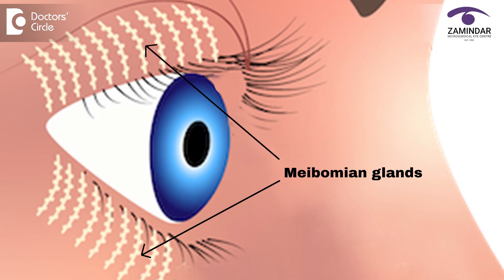The meibomian glands number around 25 to 30. They are glands placed vertically and parallel to each other in both the upper lid and the lower lid, and their orifices open onto the lid margins. The outer lipid layer contains a substance called meibum, which is secreted from the meibomian glands — it is a constituent of the lipid layer.